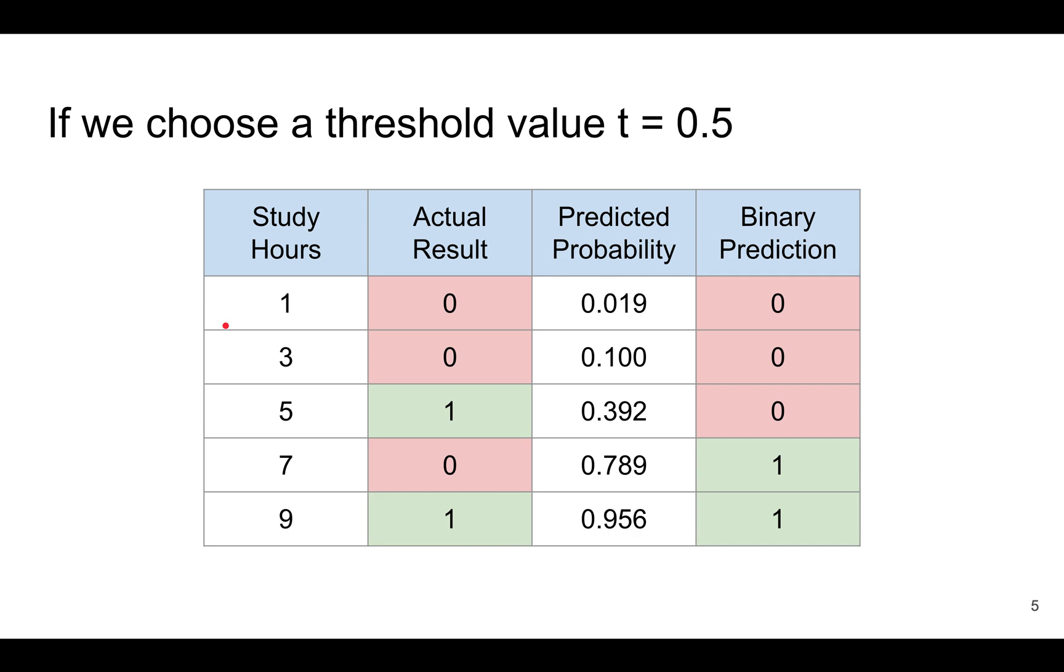Here's a very small example. Let's say we chose a threshold value of 0.5. So these three observations have a probability less than 0.5, so we predict 0 and the other two we predict 1.